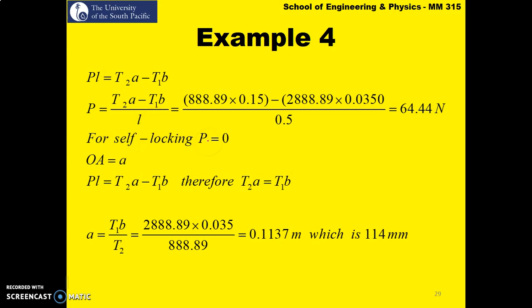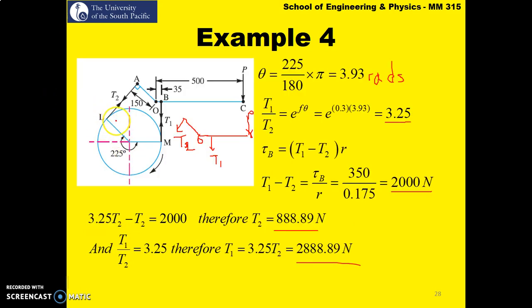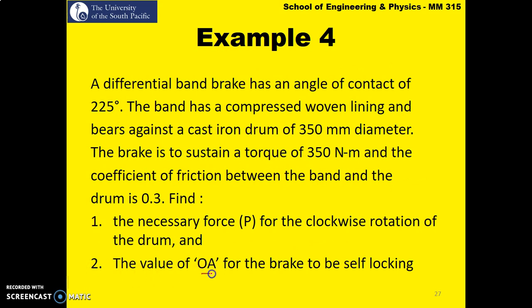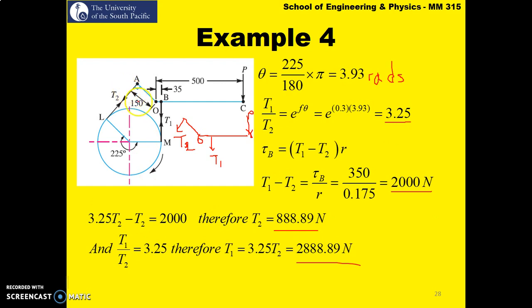And for self-locking, P is equal to 0. So we know that OA, the distance OA is A. So what we do is again we take sum of moments about point O. We have the same equation coming up over here. So for self-locking we say that simply P is 0. So this term becomes 0. So you have T₂A is equal to T₁B. So we solve it for A which is the distance OA you are looking for. So that OA is simply 114 mm. So in this question it said the value of OA for the brake to be self-locking.